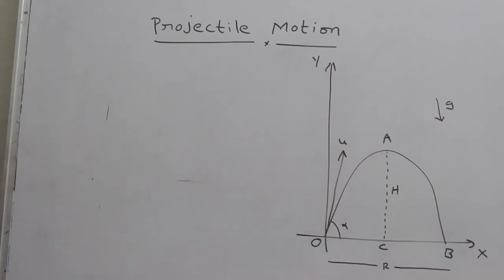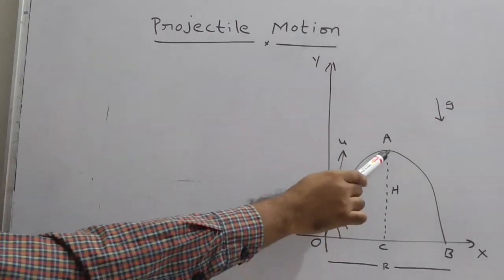the particle is projected from point O with an initial velocity u at an angle alpha with the horizontal line.